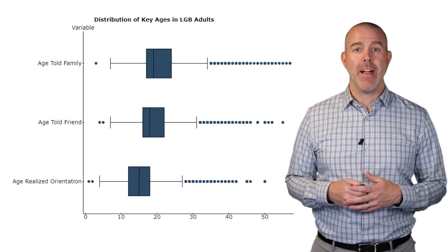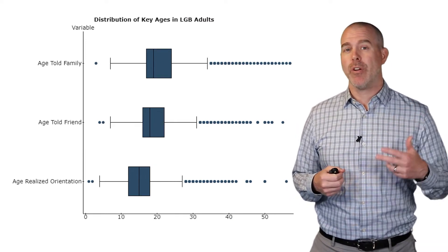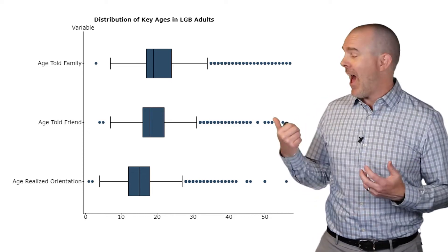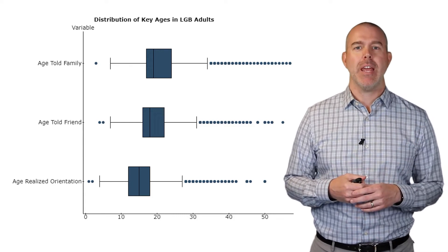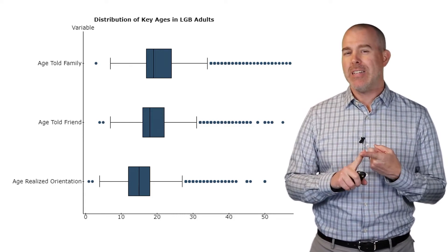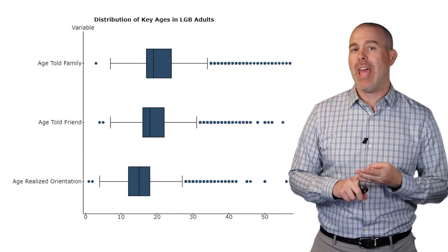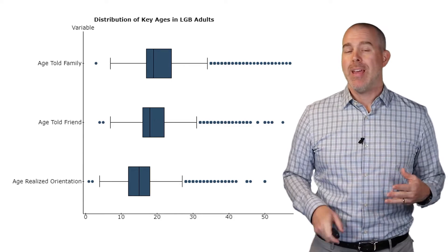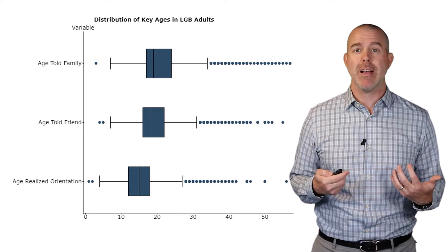One thing I find valuable about box plots is comparing variables or comparing different groups within the same variable. I have here box plots from our LGB database. I can link that in the description. And I have some key ages: the age that they realized their sexual orientation, the age that they told a friend, and the age that they told a family. And these are key ages. We can look for differences. And they kind of pop out at us when we look at the box plot.